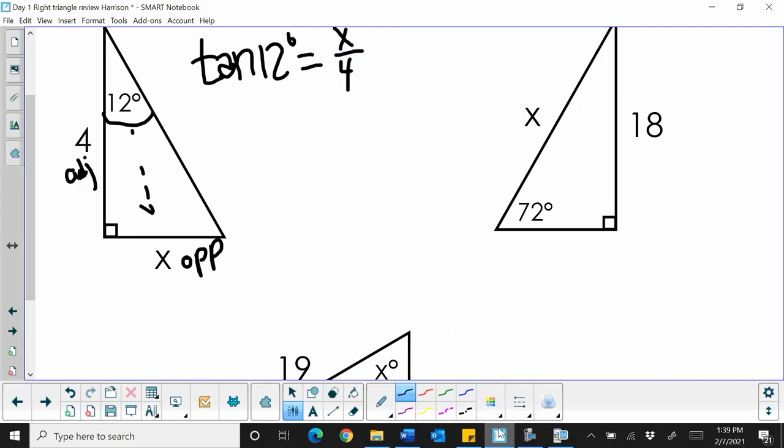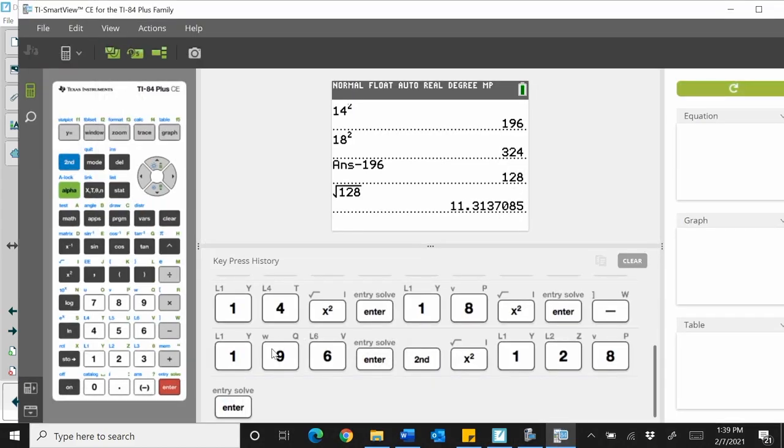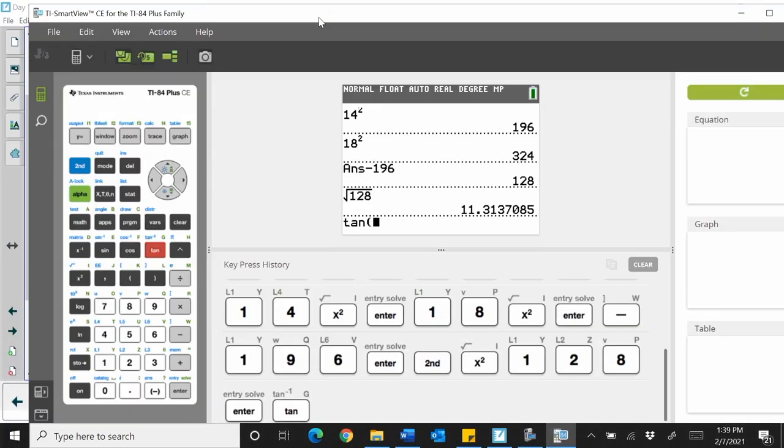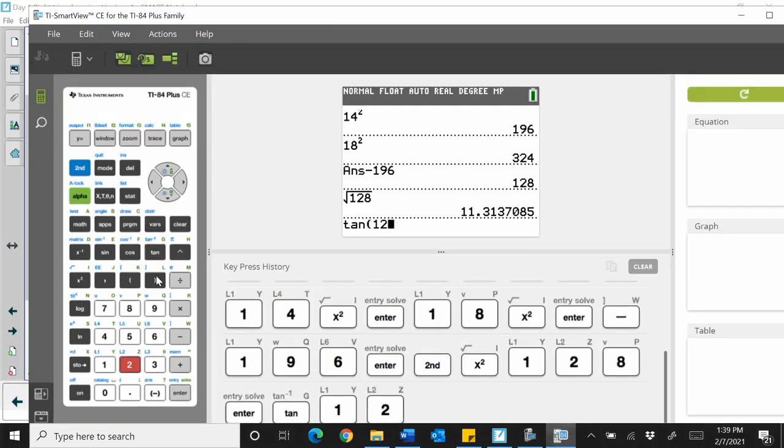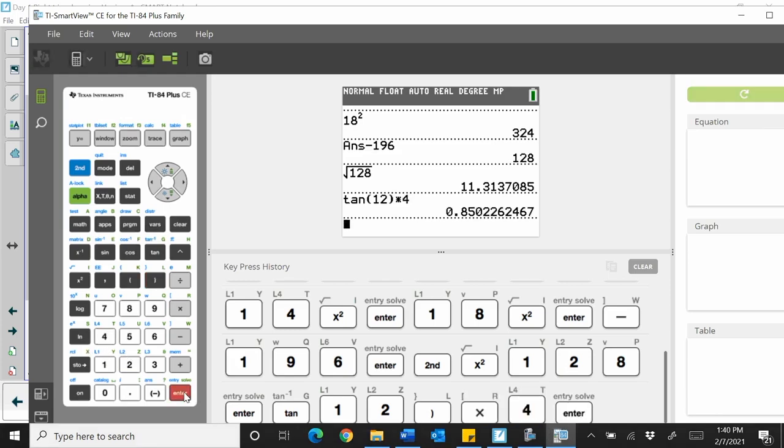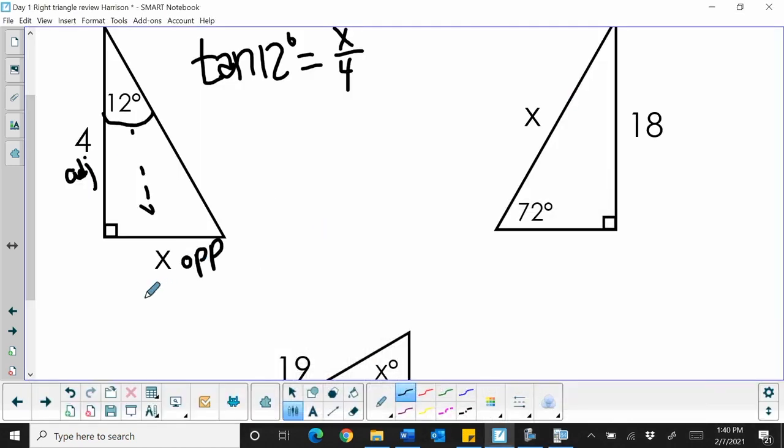Grab your handy-dandy calculator and take the tangent of 12. Close that bracket. If not, you're going to multiply the angle times 4. And that's going to give us 0.85. So that means this side over here is 0.85, which is less than 1.